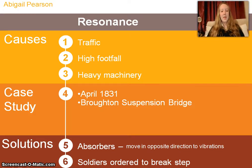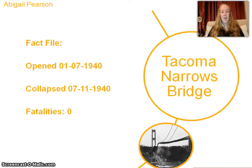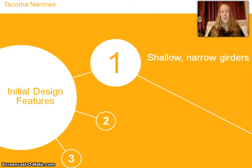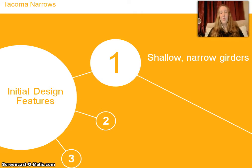The first case study is the Tacoma Narrows collapse on the 7th of November 1940. Before the bridge was built, it was predicted that there would only be light traffic across it, so it was built very thin for its length. Shallow and narrow girders were used, which meant the bridge was insufficiently rigid, and movement was even experienced during construction.